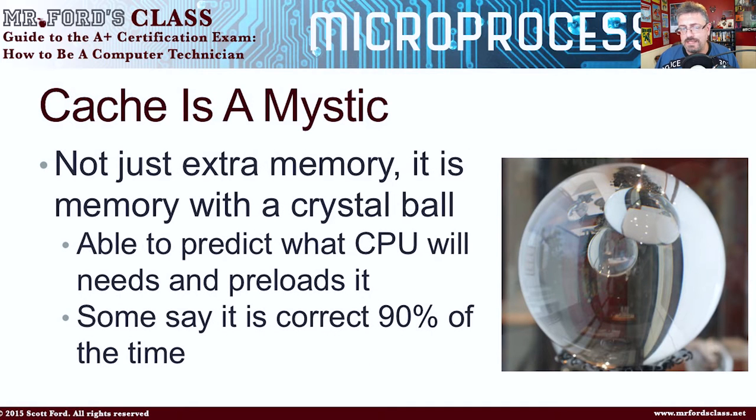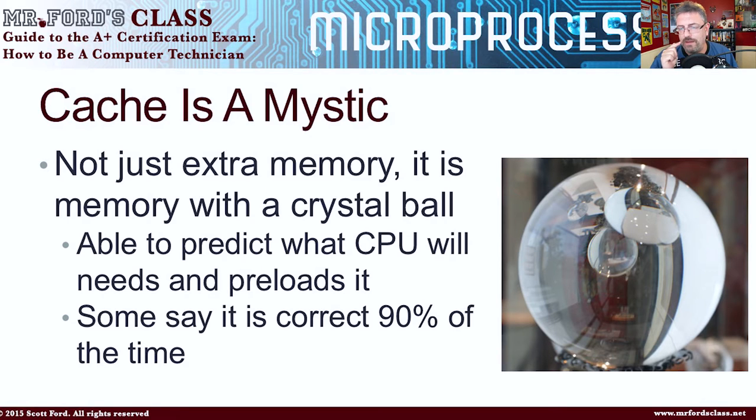Not only is cache special memory, special RAM, it also has mystical properties — it's almost like a fortune teller. The cache is able to predict with about 90% accuracy, or more depending on who you read, what you're going to want next. So it preloads information. For example, let's say I was working on a Word document and I wanted to load something else. The cache predicts pretty accurately where I'm going to go next. When the CPU requests it, it doesn't have to go all the way over to the RAM — it goes right to the cache, which provides that information fairly quickly, and the CPU gets on with its life.